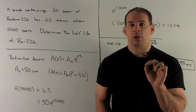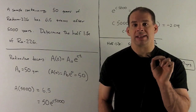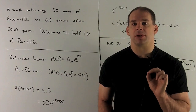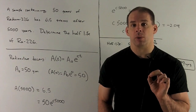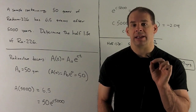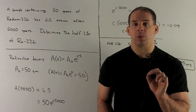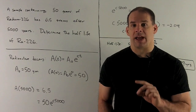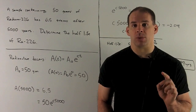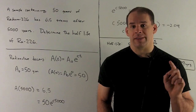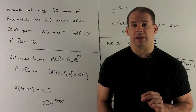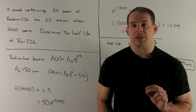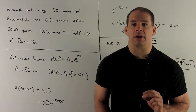First, let's take a look at t equals zero. If I put zero into the equation, we get e to the zero, which equals one. So we're left with A-zero, and we know at t equals zero the amount is 50. So A-zero is 50 — that's taken care of.